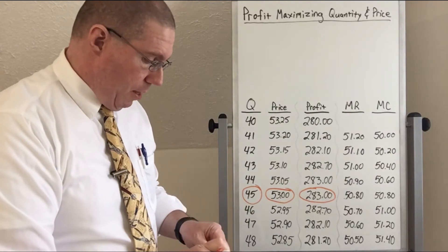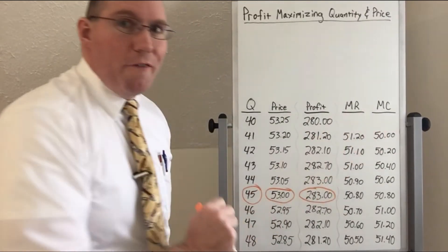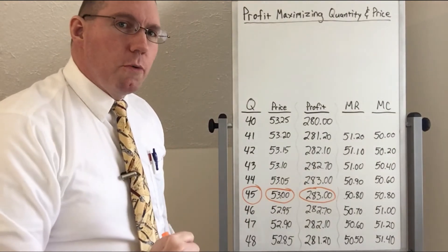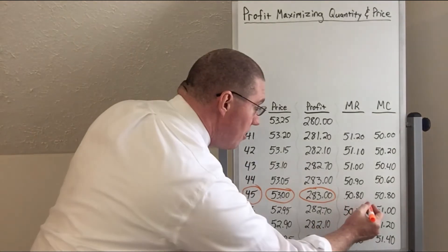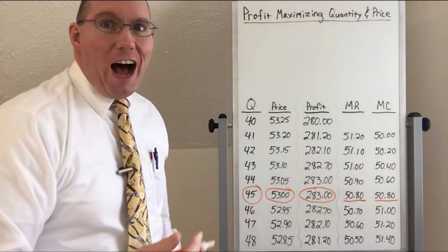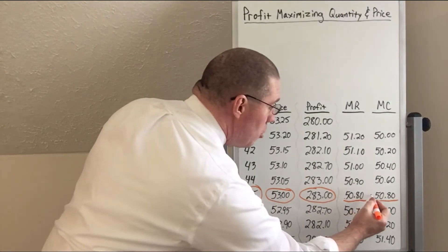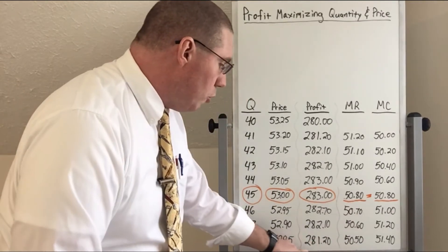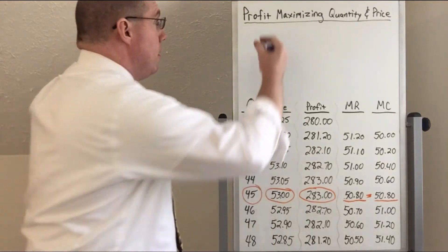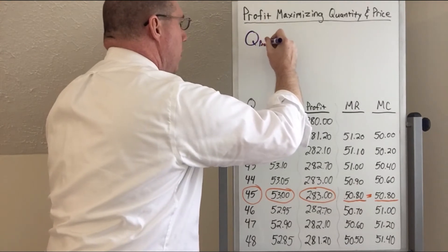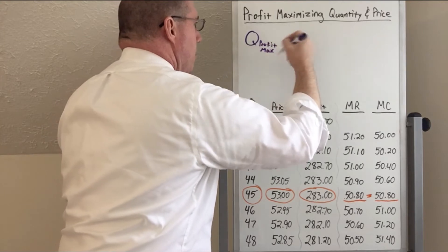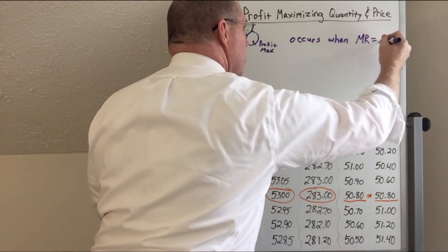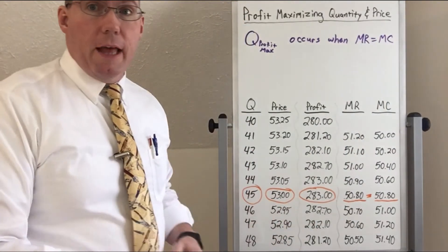Now here is the argument I'm going to make. I want you to come over to marginal revenue and marginal cost, and look at those values at a quantity of 45. Do you see what is interesting about marginal revenue and marginal cost at that quantity? They are the same number — they are equal to each other. So the argument I want to make is that the profit-maximizing quantity occurs when marginal revenue is equal to marginal cost. That is what we call the profit-maximizing rule, and I'm going to put that on the board in just a couple of minutes.